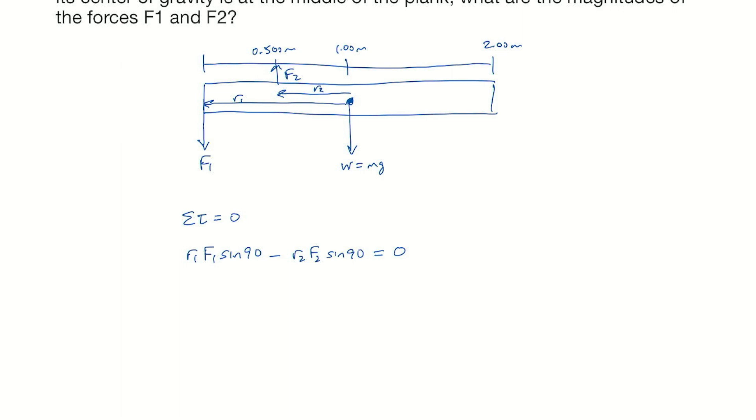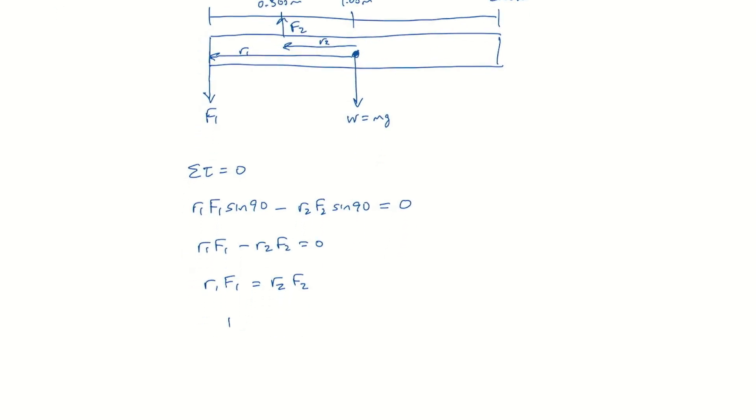Sine 90 is 1, so we have R1 F1 minus R2 F2 is 0. So R1 F1 is equal to R2 F2. And so that means F1 is R2 over R1 times F2.